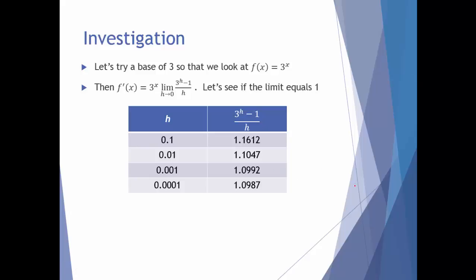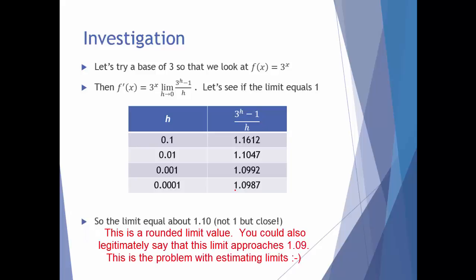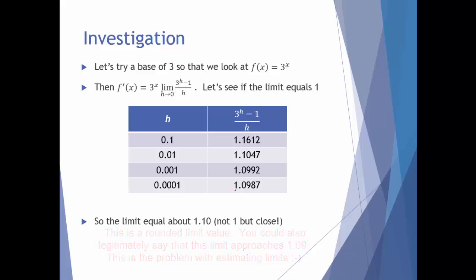I notice this is going in the correct direction — it's getting closer to 1, not farther away. But it would be an incorrect conclusion to say this limit approaches 1. Notice I'm already at h = 0.0001 and I can't get this to move off of 1.09. So this limit is actually approaching about 1.10, give or take. Again, not 1, but close. The right-hand and left-hand limits show similar behavior.